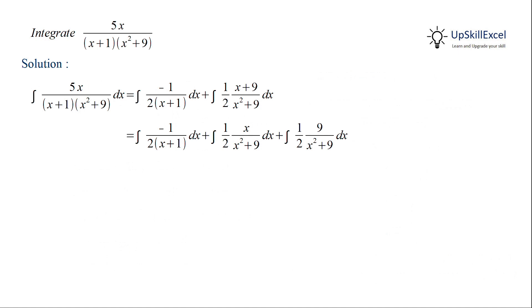Now we observe that the first term is of the format 1 over x plus a which can be integrated to a logarithmic function. The second term has x in the numerator and x square plus 9 in the denominator. The numerator is actually a derivative of the denominator. So we can solve this by substituting x square as t or we can also directly apply the integration and we recognize that derivative of log of x square plus 9 is equal to 1 over x square plus 9 multiplied by 2x.